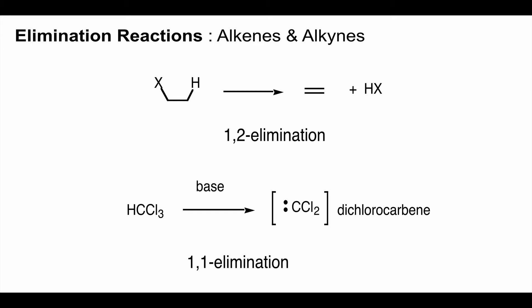When you do a 1-2 elimination, you end up with a double bond in the molecule. When you do a 1-1 elimination, you end up with what's called a carbene — it's an unusual reaction we'll encounter maybe two or three times during the course of the year. But by far the reactions we're going to see this year are the 1-2 eliminations that result in alkenes.